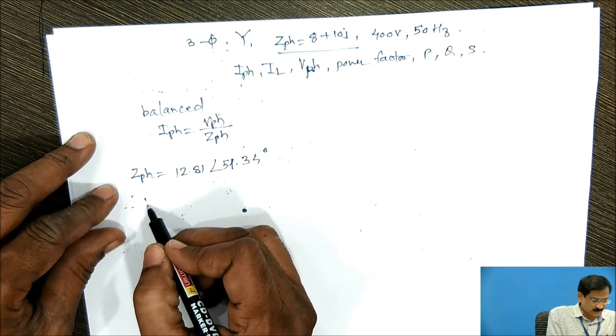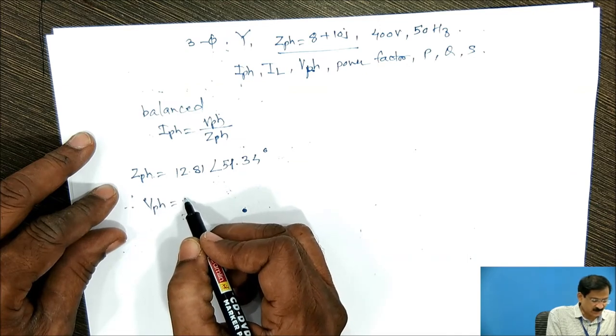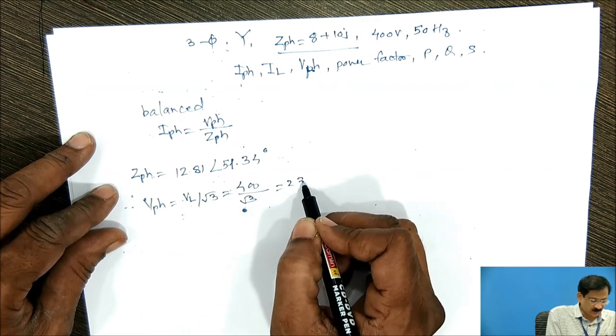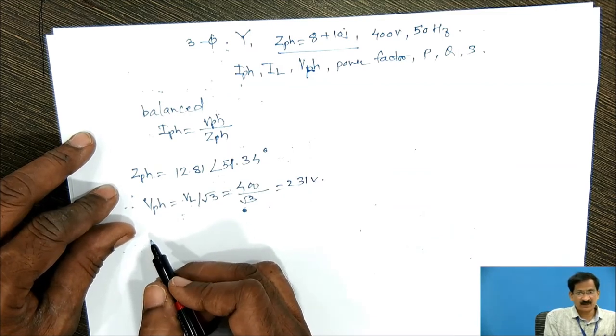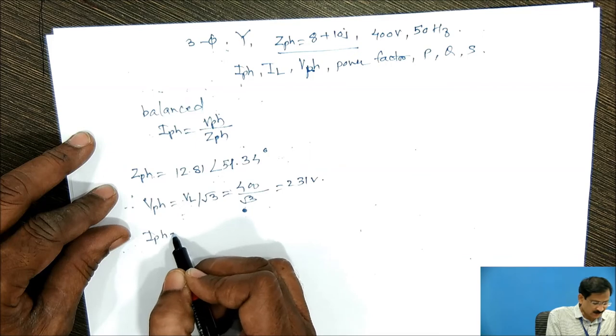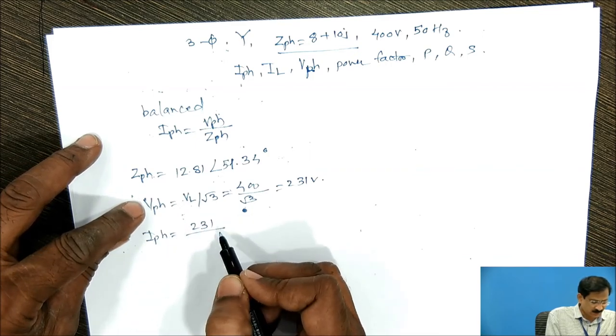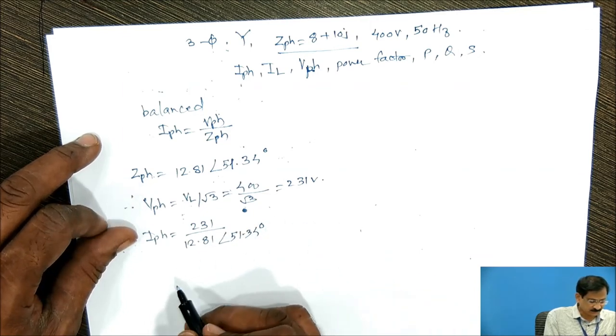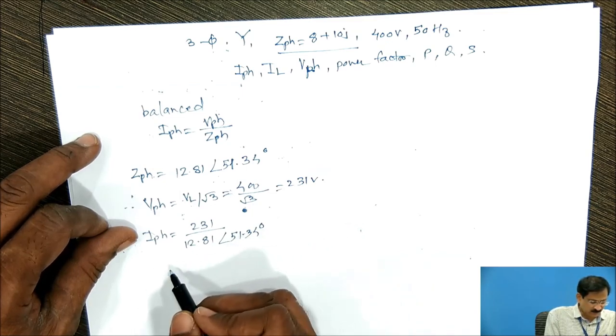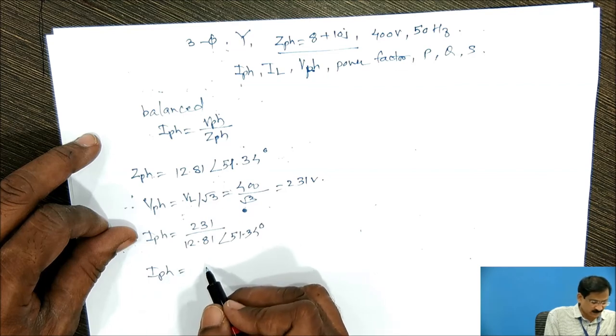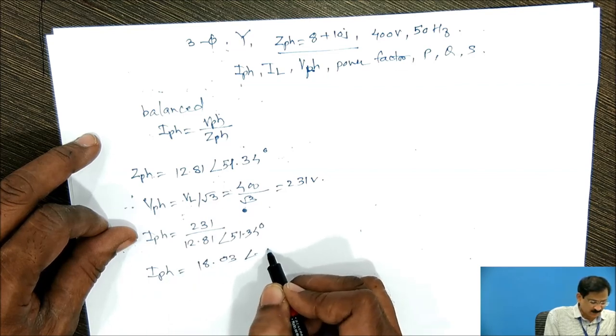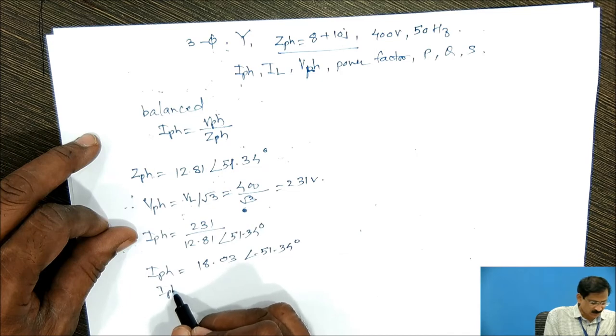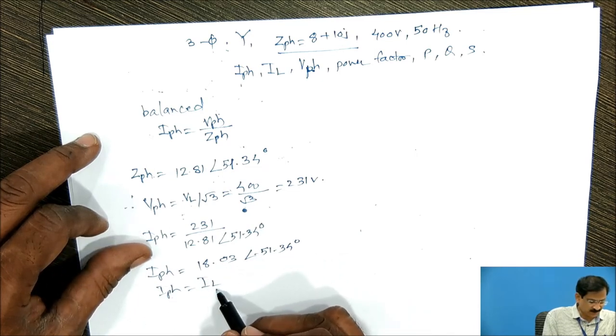Next, what is Vph? For Vph, it is VL upon root 3. So 400 divided by root 3 comes out to be 231V. Now we can find out Iph. Iph is equal to Vph 231 upon Zph 12.81 angle 51.34 degree. So in this way, using calculator, we got the value of Iph which is equal to 18.03 angle minus 51.34 degree. So this is Iph, which is also equal to line current, because in star connected system, both Iph and IL are same.